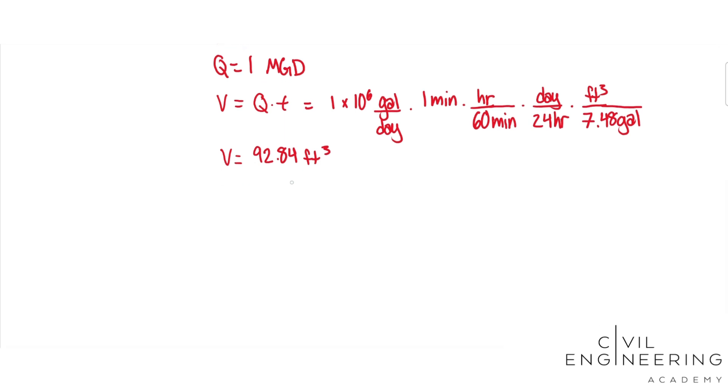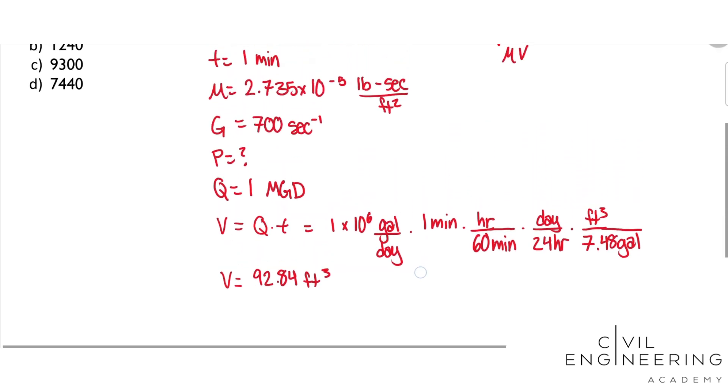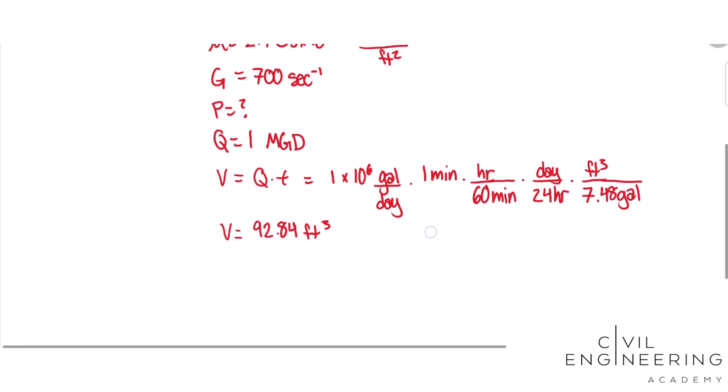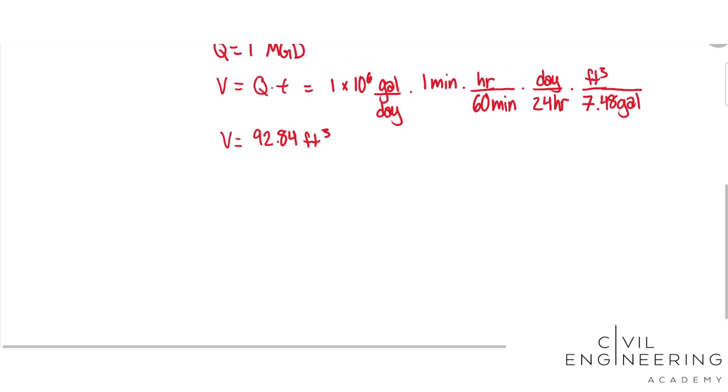Now that we have that, we can pretty much just manipulate this equation to find P and plug and chug. So if G equals the square root of P over mu V, let's square both sides. So we got G squared equals P over mu V. And let's multiply this to the other side, so then we got P equals G squared mu V.